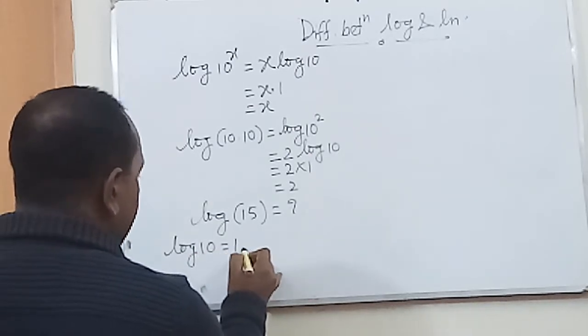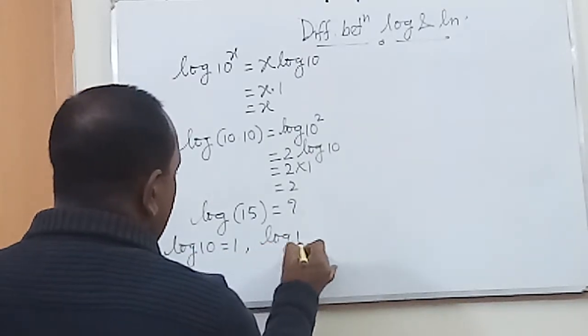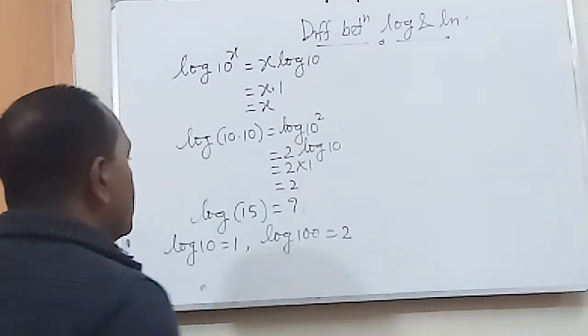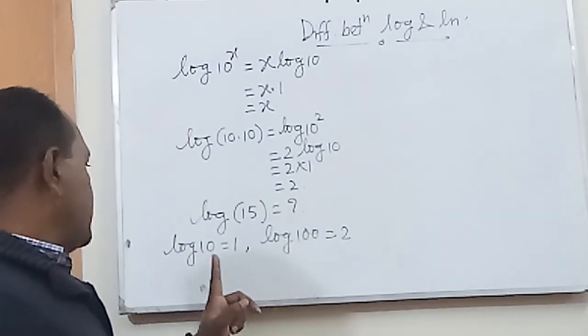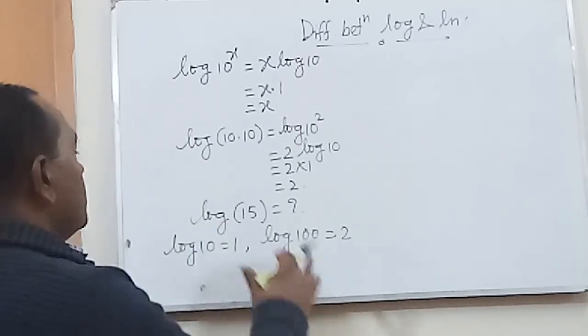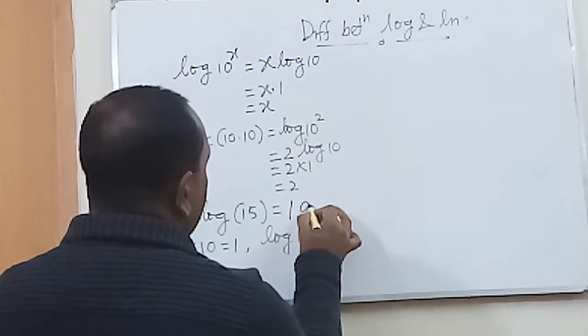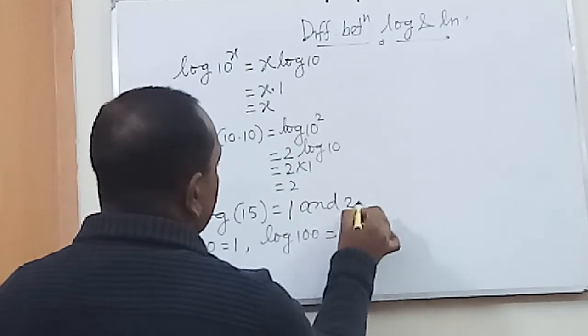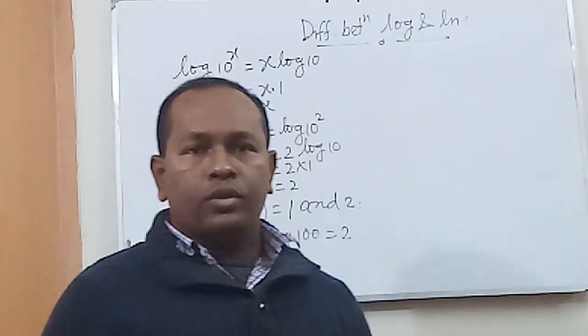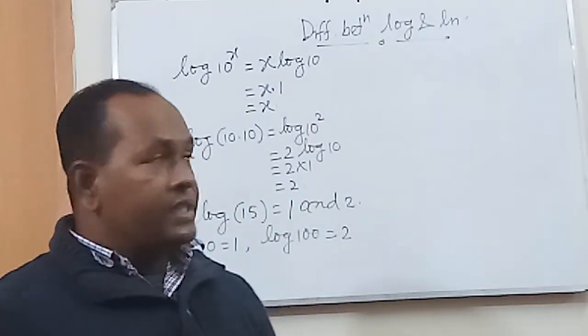And log 100 is equals to 2. Since 15 lies between 10 and 100, the value of log 15 will lie between 1 and 2. That's all about common log. Let's see natural log.